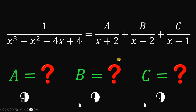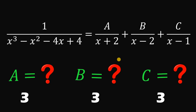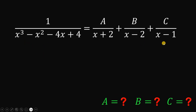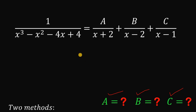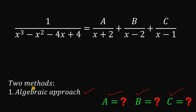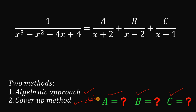You can pause this video if you want to give this problem a try. Now let's answer this question together. Given this equation, our goal is to solve for the values of A, B, and C. I will present 2 methods: the first one is the algebraic approach, the usual way, and the second one is the Cobra App method, also known as the shortcut for this kind of question.